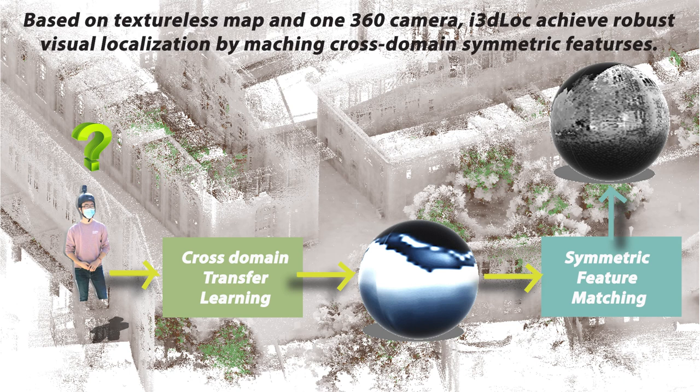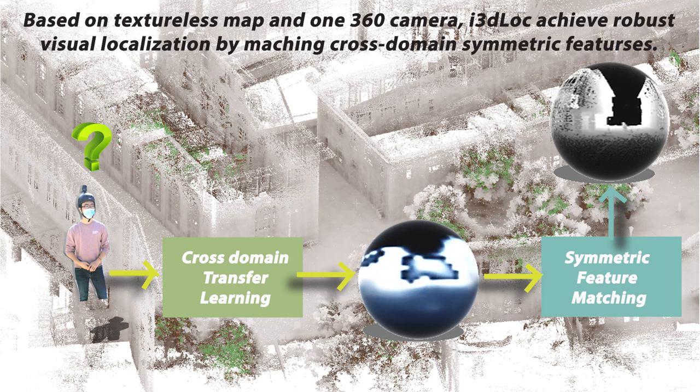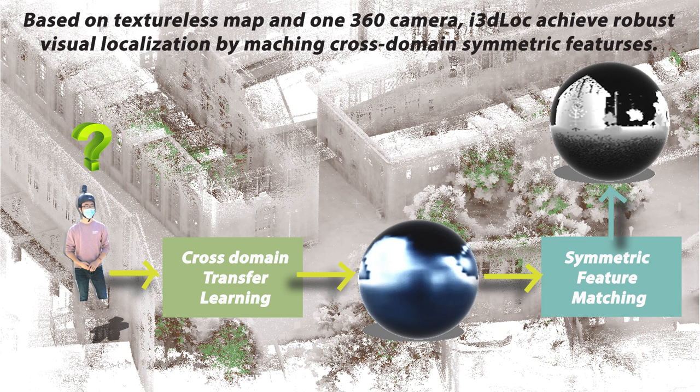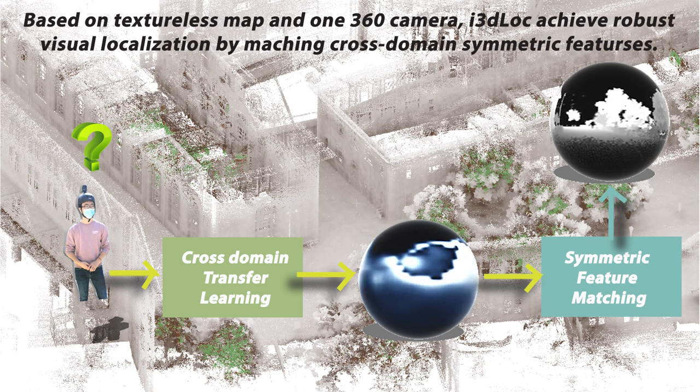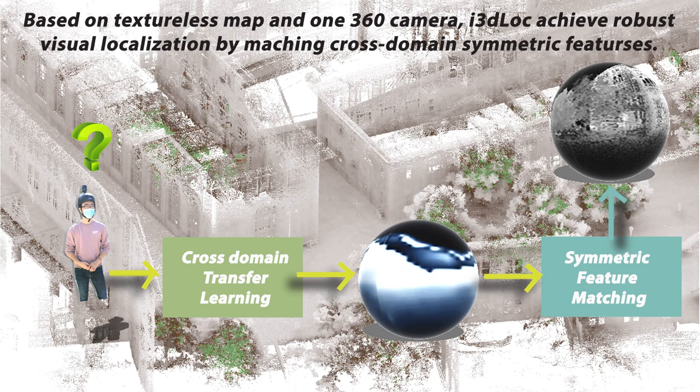Based on one single 360 camera and a texture-based map, we designed a cross-domain transfer learning module to extract geometry features from visual inputs. The final localization results are based on symmetric feature matching between the image and the 3D domain.